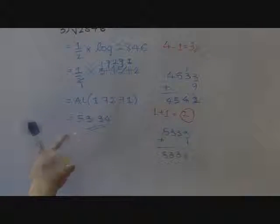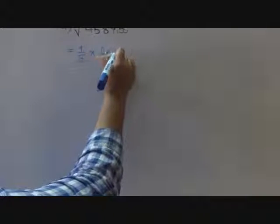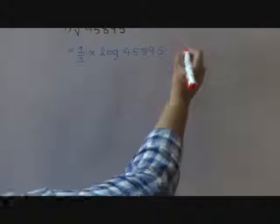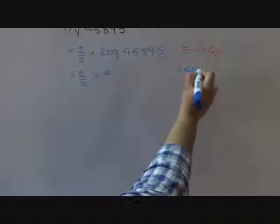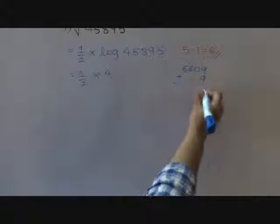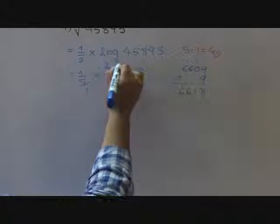The square root is calculated. Now let us take a slightly bigger number of 5 digits: 45895. Again, 1 by 2 into log of this number. Characteristic: 5 digits, so 5 minus 1 equals 4. We write 1 by 2 into 4 point something. Log at row 45, column 8, mean difference 9. We get 66618 after simple division. We then find the antilog of this number.